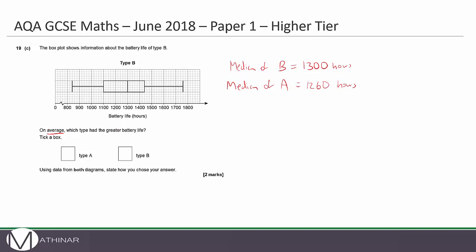So on average, which type had a greater battery life? So my average I've done is my median. And my median is saying that B has a greater median. So B is correct. And state how you chose your answer. So I chose my answer of B because the median of B is greater than the median of A.